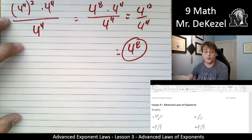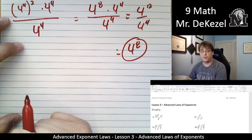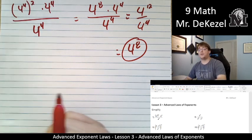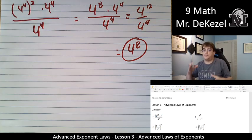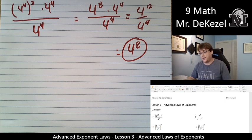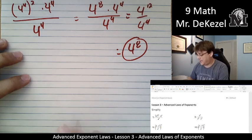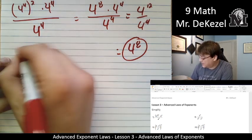Then we subtract when we are dividing, so that's four to the power of eight as our final answer. Twelve minus four is eight. We are just going to follow BEDMAS as we move through, keeping the top and the bottom separate until the end.